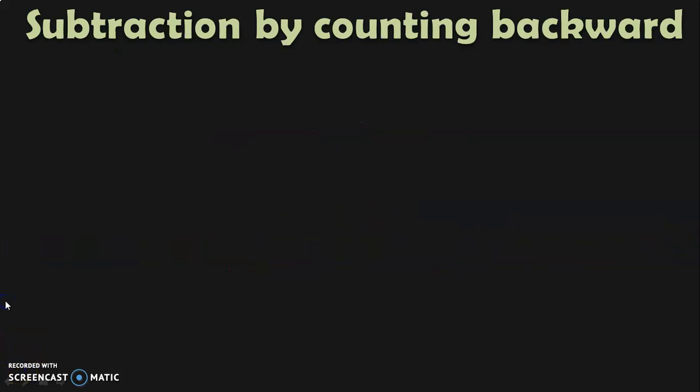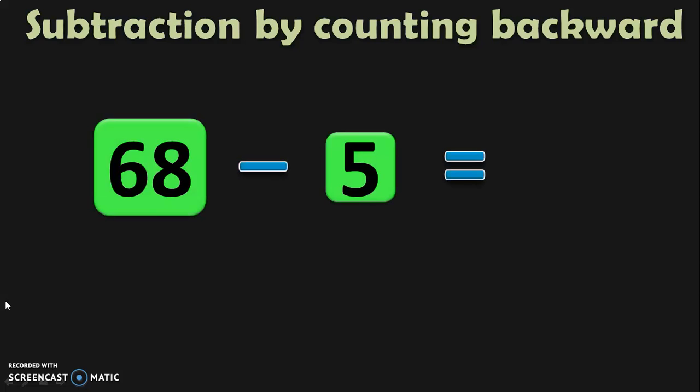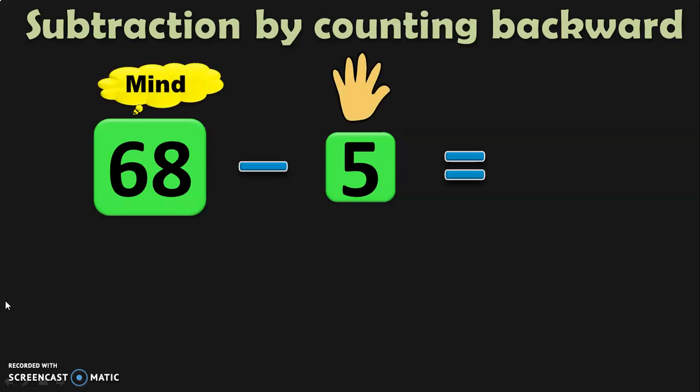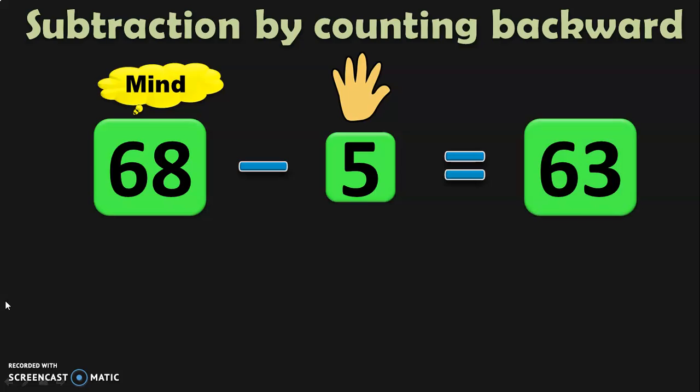The next topic is subtraction by counting backward. We are going to subtract 68 minus 5. Have 68 in the mind and 5 in the fingers. Counting backward means we count the before numbers. So 68 minus 5: 68 in the mind, 5 in the fingers — 67, 66, 65, 64, 63. So the answer is 63.